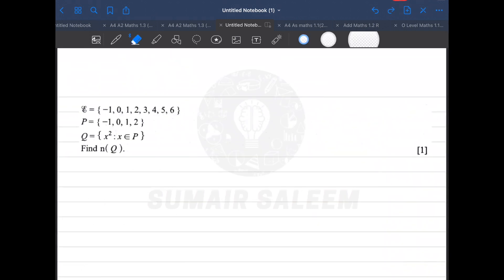Universal set is {-1, 0, 1, 2, 3, 4, 5, 6}. Set P is {-1, 0, 1, 2}, and what's set Q? Q = {x² | x ∈ P}. That means you need to square all the elements of P: (-1)² is 1, 0² is 0, 1² is 1, and 2² is 4.